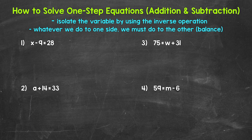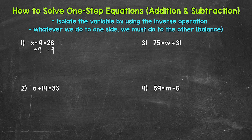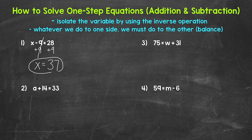What's the inverse or opposite of subtraction? Well, addition. So we need to add 9 to the left side of the equation. Now remember, whatever we do to one side of an equation, we must do to the other in order to keep everything balanced and equivalent. So we need to add 9 to the right side as well. Looking at the left side of the equation, we are subtracting 9 and adding 9, so these 9s cancel each other out and our variable x is now isolated. So x equals, and then on the right side of the equation, we have 28 plus 9, which gives us 37.